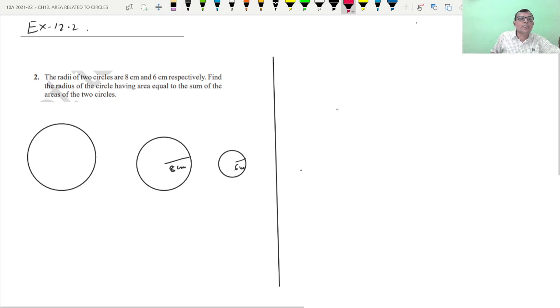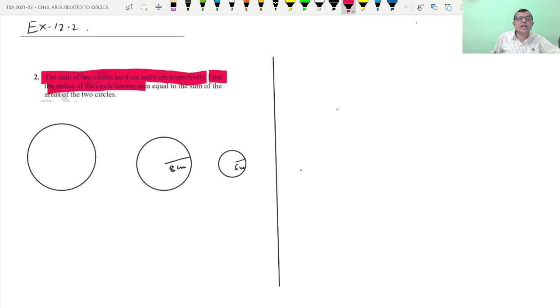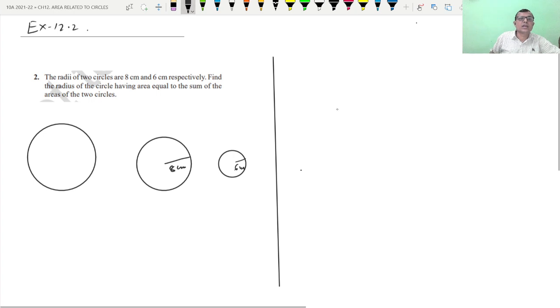It is given the radii of 2 circles are 8 and 6 centimeters respectively. Find the radius of the circle having area equal to the sum of the areas of the 2 circles. The sum of the area of these 2 circles equals this.